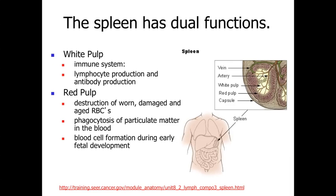The final organ associated with the immune system we're going to talk about is going to be the spleen. The spleen is a little bit different than the lymph node and the thymus. The spleen is going to have two functions: essentially an immune system function, and then also a function associated with the red blood cells of the cardiovascular circulatory system. These two functions are going to be delineated within different regions of the spleen.